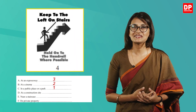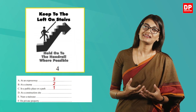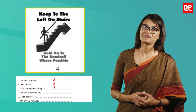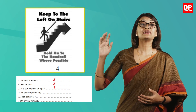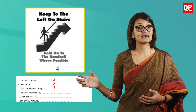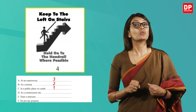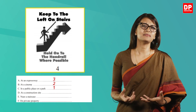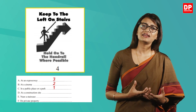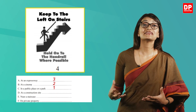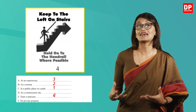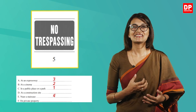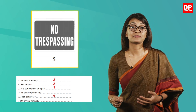The fourth sign shows a man climbing a set of stairs. It states: 'Keep to the left on stairs. Hold on to the handrail where possible.' From the image, we realize this sign should be placed near a staircase — answer E.